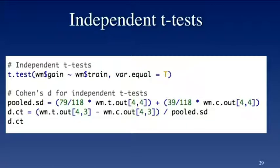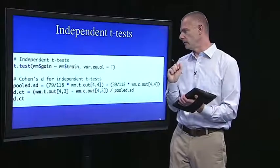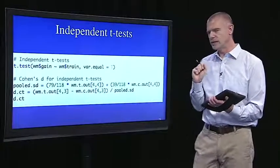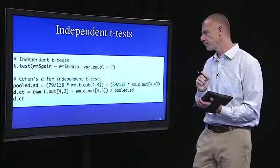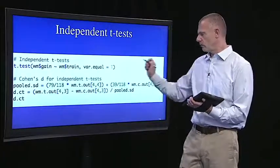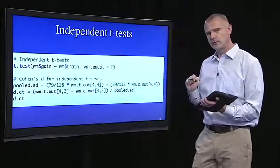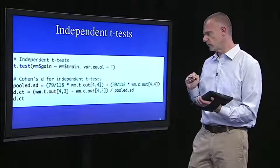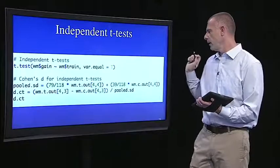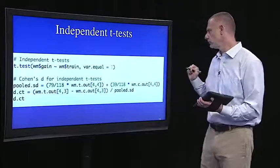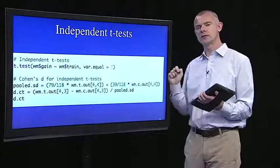Then, my Cohen's D comparing control and training, that's what my coding means there. So d.ct is Cohen's D comparing control and training. It's just the mean for the training condition, that's wm.t.out 4.3, minus the mean for the control condition, divided by the pooled standard deviation.